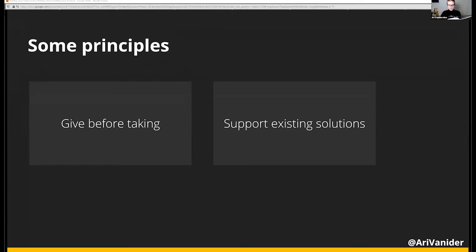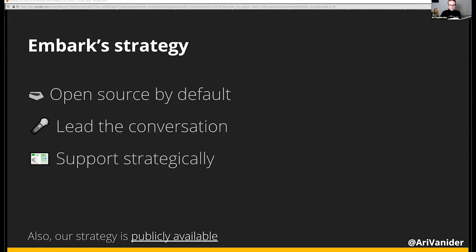As an example, let's look at Embark's open source strategy. Our strategy is brief — just three parts. The first one is open source by default. This means that for everything new we develop, we consider if or when it can be open sourced. Every time we develop something new that's reusable, not tied to proprietary stuff, and will be maintained for the foreseeable future, we just make it public.